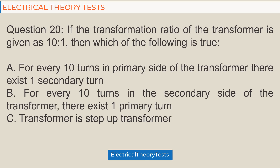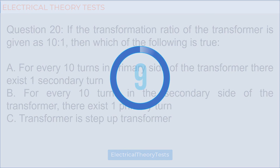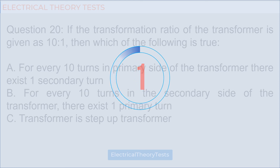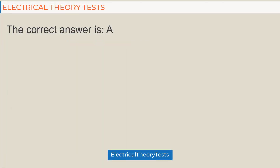Question 20: If the transformation ratio of a transformer is given as 10 to 1, then which of the following is true — a) for every 10 turns in the primary side of the transformer there exists one secondary turn, b) for every 10 turns in the secondary side there exists one primary turn, c) the transformer is a step-up transformer. The correct answer is a).